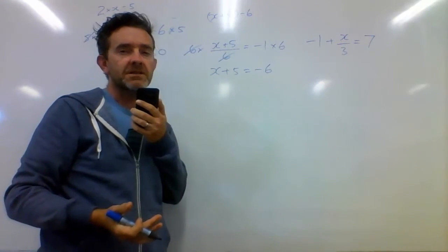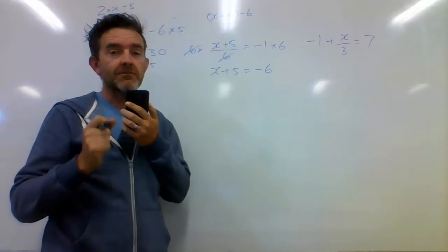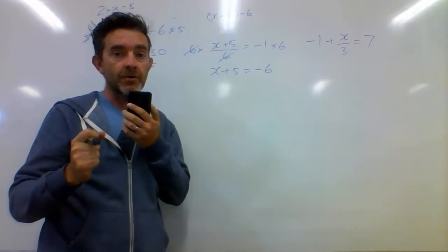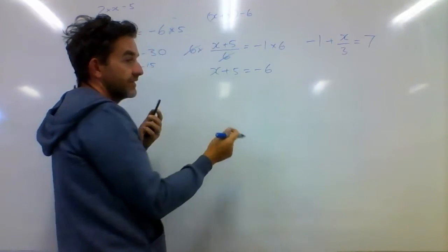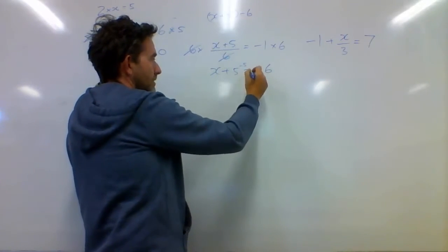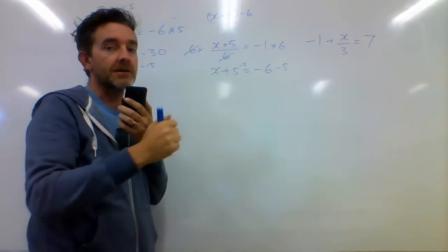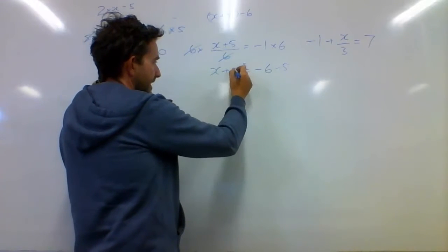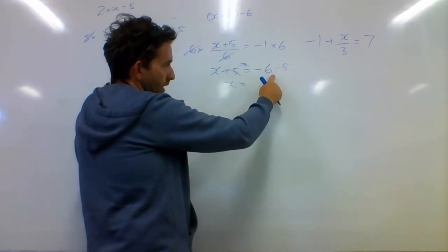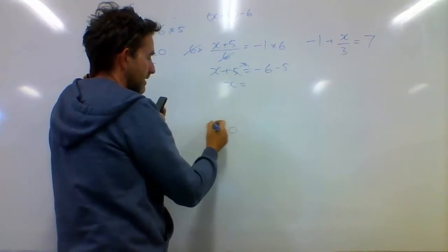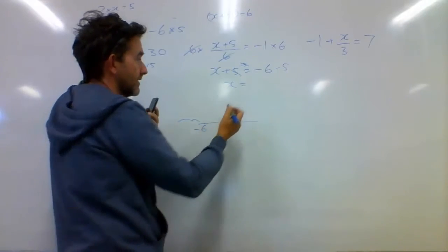So maybe you can do that by inspection, but maybe you're a bit unsure with the negative numbers, so let's just do this methodically. If I'm getting rid of a positive 5, I need to take 5 from both sides. So x plus 5 take 5 will equal negative 6 take 5, keeping both sides the same. A positive 5 and a negative 5 cancel each other out. Negative 6 is down here on the number line — taking another 5 away, it's getting more negative — so the answer is negative 11.